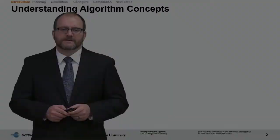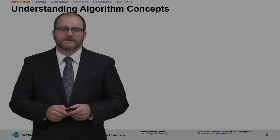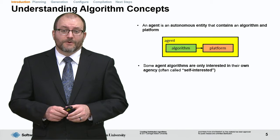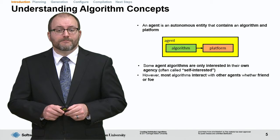Next, let's talk about the concept of agents. An agent is an autonomous entity that contains an algorithm and a platform in GAMS. Some agent algorithms are only interested in their own agency—we call these agents self-interested. However, most algorithms interact with other agents, including friends or foes. Multiple interacting agents are often called a multi-agent system.